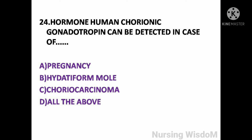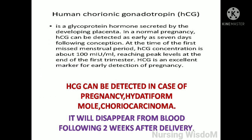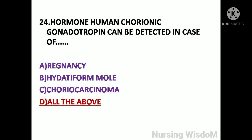Next question: The hormone human chorionic gonadotrophin can be detected in case of — option A: pregnancy; option B: hydatidiform mole; option C: chorionic carcinoma; option D: all the above. HCG is a glycoprotein hormone secreted by the developing placenta. In a normal pregnancy, HCG can be detected as early as seven days following conception. At the time of the first missed menstrual period, HCG concentration is about 100 milli-international units per ml, reaching peak level at the end of the first trimester. HCG is an excellent marker for early detection of pregnancy, and it can also be detected in hydatidiform mole and chorionic carcinoma. It disappears from blood two weeks after delivery. So here the answer is option D, all the above.